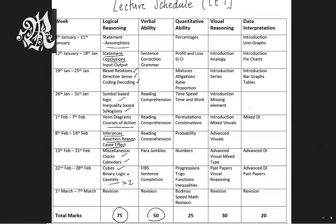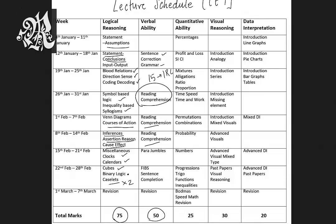The next most important area is verbal ability, which comes with 50 marks, making it very important. It has fewer topics than logical reasoning. You have sentence correction, grammar, reading comprehension — which will play a very important role in CET. Earlier, CET used to have 15 questions on one RC only; now you have three RCs sometimes of five questions each, or two RCs of seven and eight respectively. You also have para jumbles, fill in the blanks, and sentence completion.